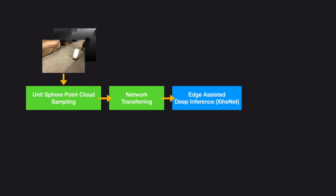Next, XIHE transfers the sampled point cloud to an edge server and estimates the lighting information in the form of spherical harmonics coefficients with our system co-design model, XIHE-Net, which is based on the state-of-the-art 3D vision-based lighting estimation model. Spherical harmonics coefficients are a compact representation of omni-directional lighting information, consisting of only 27 float numbers, and are widely used and adopted in modern graphics rendering.